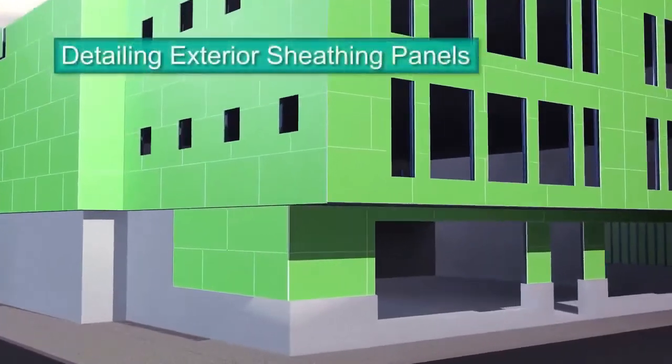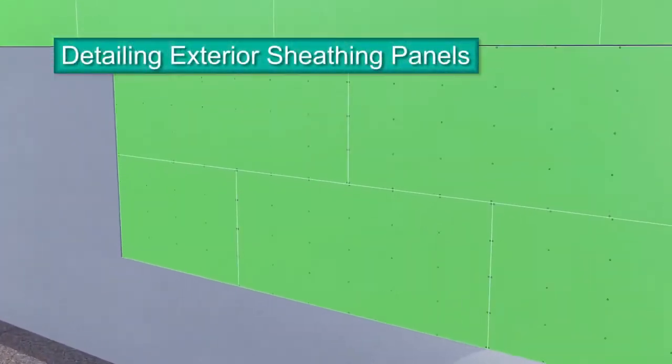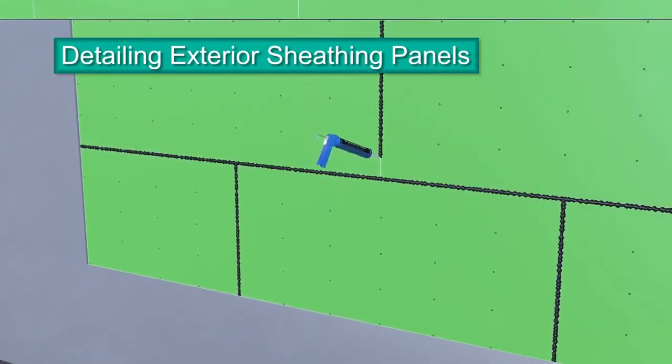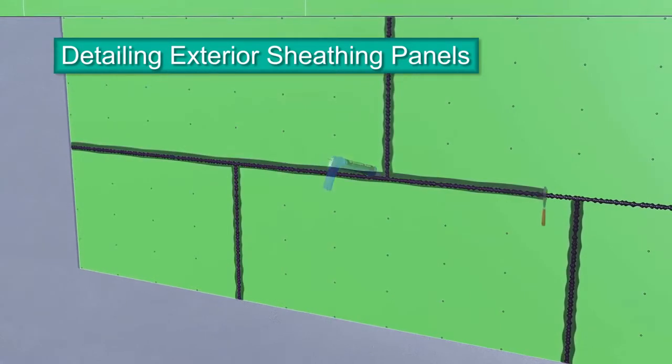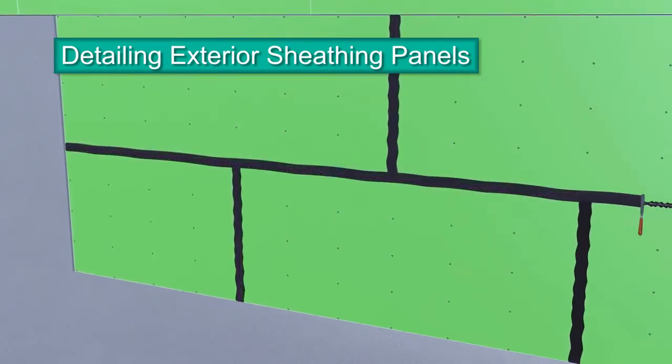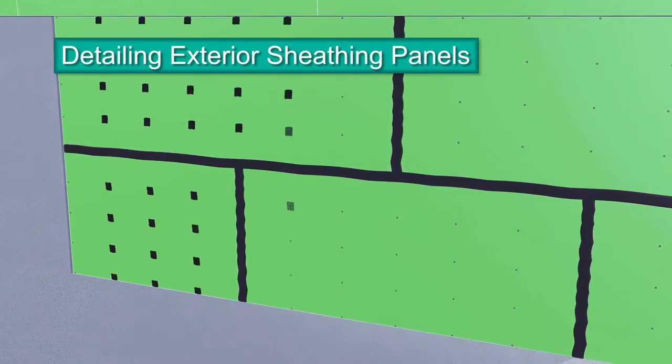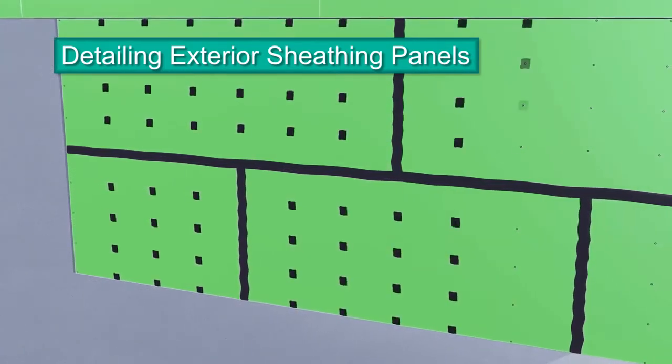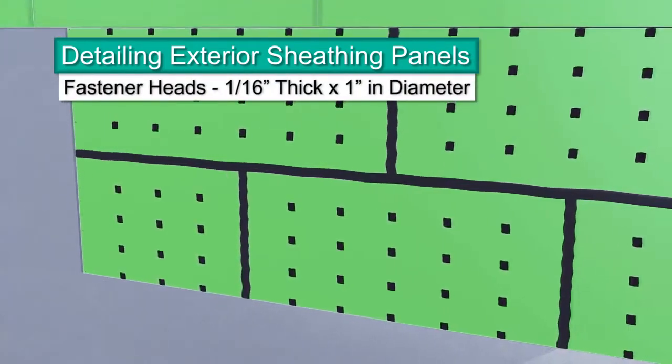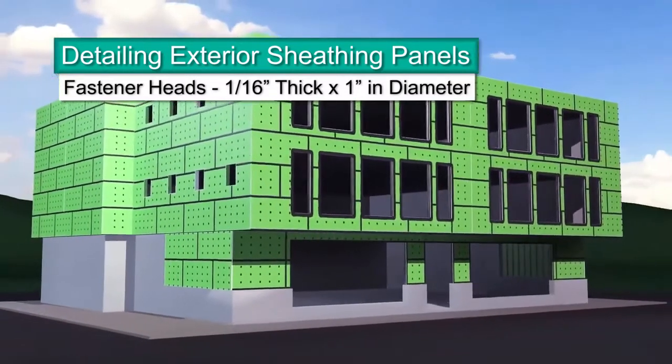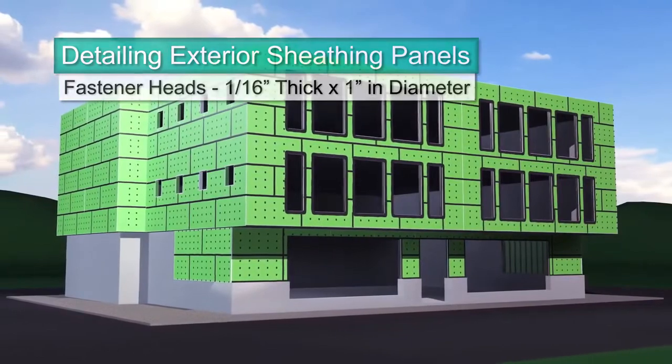Exterior sheathing panels can be detailed using Dimonic 100 high-performance polyurethane sealant. Dimonic 100 is the approved sealant for detailing all board joints and fastener heads. Apply sealant to board joints. When intersecting horizontal and vertical joints, make sure to apply the sealant so no holes or gaps appear. Spot all fastener heads with sealant 1/16th of an inch thick and 1 inch in diameter, just enough to completely cover the fastener heads.